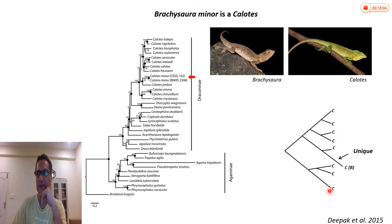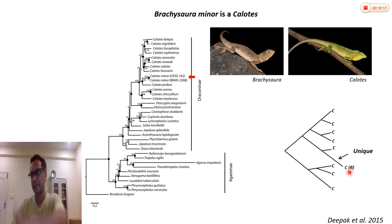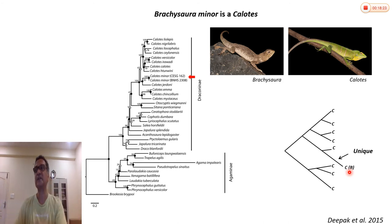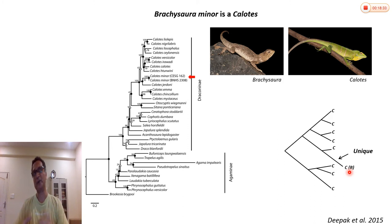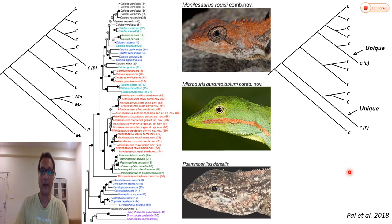Much of the Calotes species are arboreal or at least semi-arboreal, but Brachysaura is exclusively terrestrial, ground-dwelling. When one particular lineage adapts to a different lifestyle, it is going to acquire unique characters making it very different. Traditional morphology-based taxonomy won't be able to determine the evolutionary relationships between species just based on morphology, because this particular lineage looks very different from Calotes, so taxonomists placed it as a separate genus.